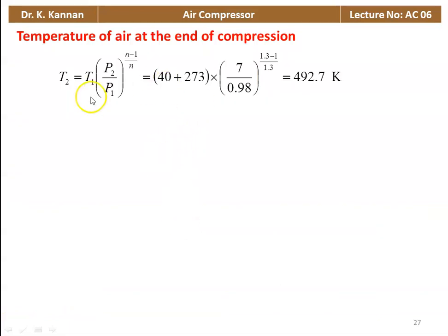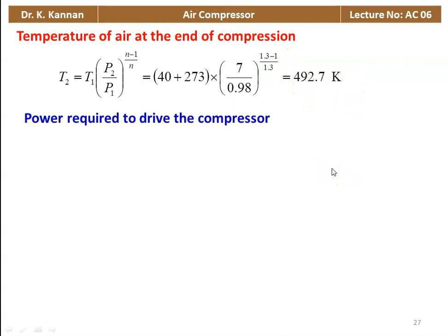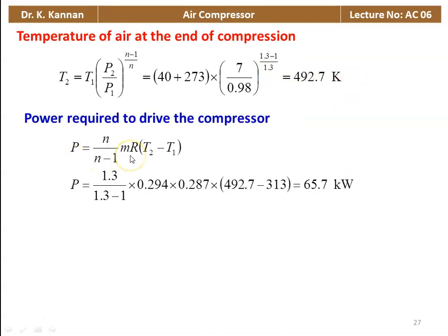Temperature of air at the end of compression: T2 equal to T1 into (P2 by P1) to the power (n minus 1) by n. T1 suction temperature is 40°C, so (40 plus 273) into (7 by 0.98) to the power (0.3 by 1.3) equals 492.7 Kelvin. Power required: P equal to n by (n minus 1) into M into R into (T2 minus T1). Substituting: 1.3 by 0.3 into 0.294 into 0.287 into (492.7 minus 313) equals 65.7 kilowatts.